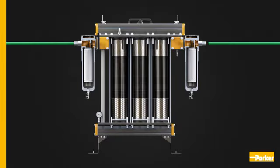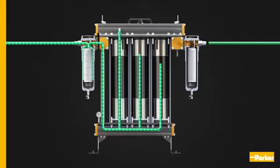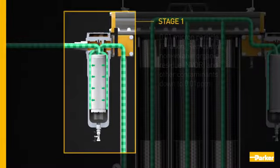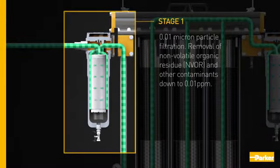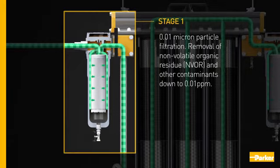pCO2 offers five stages of carbon dioxide purification in a compact modular system to offer the highest level of production plant and point-of-use protection. Stage 1: 0.01 micron particle filtration — removal of non-volatile organic residue and other contaminants down to 0.01 ppm.